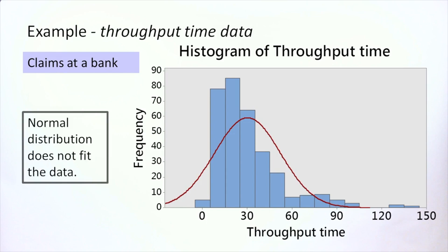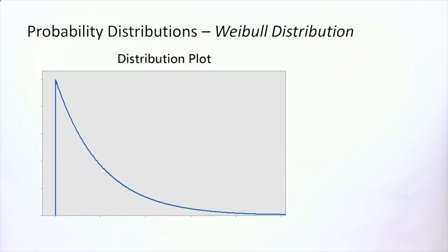Fortunately, there are also other distributions. This is the Weibull distribution and it is called a skewed distribution. A distribution like this is called skewed to the right because the tail is to the right.